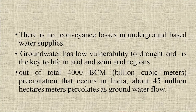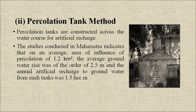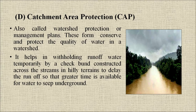Runoff captured by these barriers also allows for retention of soil, thereby serving as an erosion control measure on gentle slopes. Percolation tank method: percolation tanks are constructed across the water course for artificial recharge. Studies conducted in Maharashtra indicate that on an average area of influence of 1.2 km², the average groundwater rise was of the order of 2.5 meters and the annual artificial recharge to groundwater from each tank was 1.5 hectare-meters.